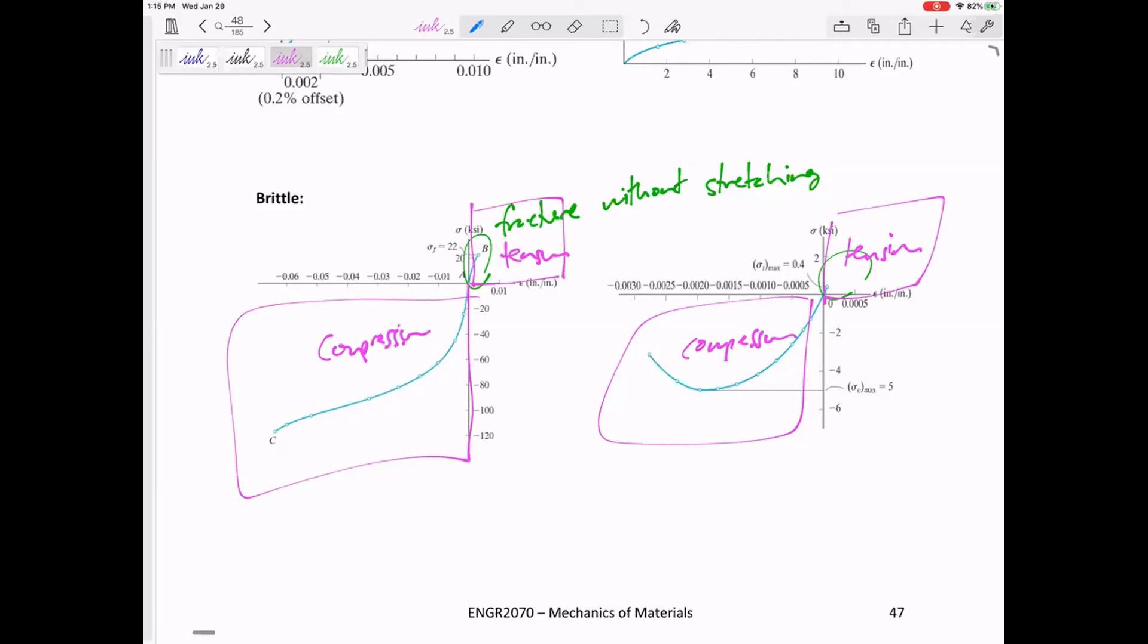Many materials have a much wider compression stress-strain curve, brittle materials, than they do in tension. I think that makes sense. Think of some materials that can withstand a compressive force but are brittle.